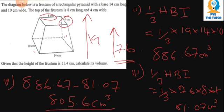So those are the four simple steps. Step one: find the missing height x using similarity — that gives the smaller pyramid's height, and adding 11.4 gives the bigger pyramid's height of 19. Step two: find the volume of the bigger pyramid using (1/3) × h × l × w. Step three: find the volume of the smaller pyramid the same way. Step four: subtract the two volumes to get the volume of the frustum. Thank you for watching, see you in the next video.